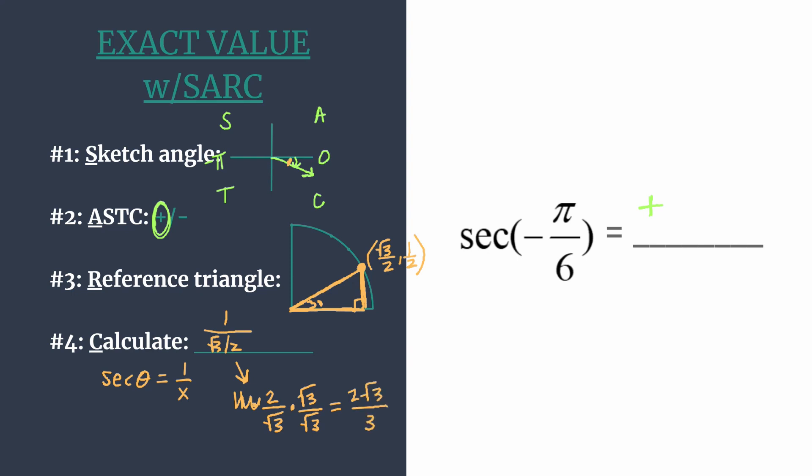And in step two, we already had decided that this is a positive final value. Secant is positive in the fourth quadrant. So our answer for secant of negative pi over six is simply two root three over three.